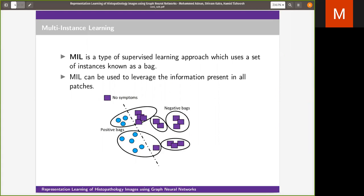Multiple instance learning or MIL is a type of supervised learning approach where we have labels for a group of instances rather than individual instances. This is in contrast to conventional machine learning where we have labels for each instance.